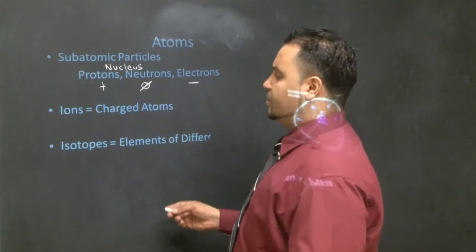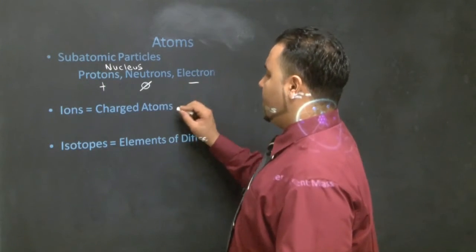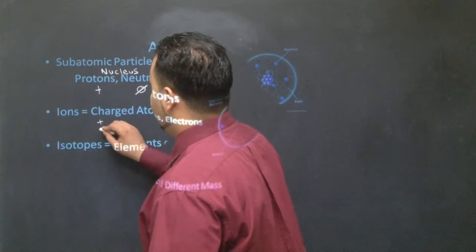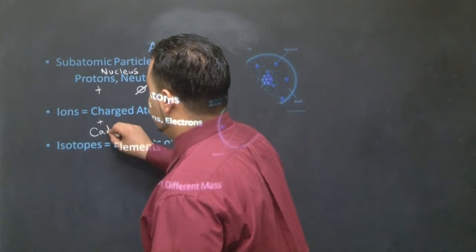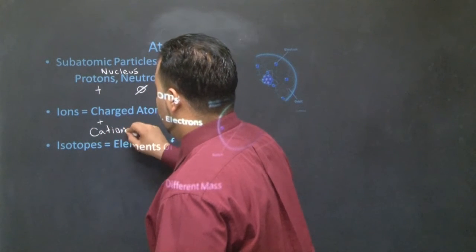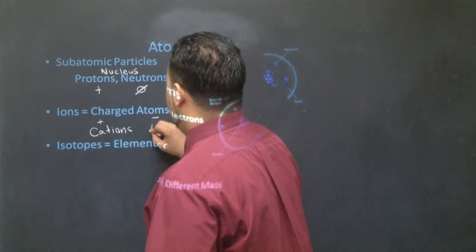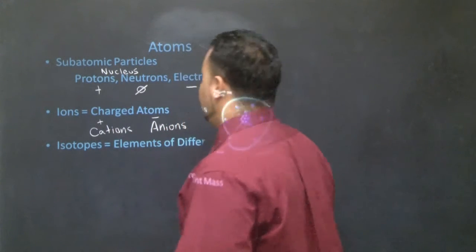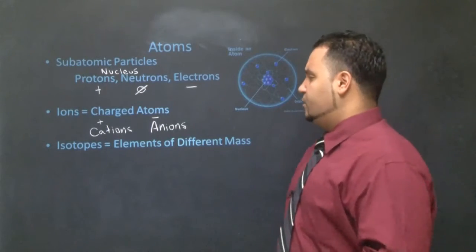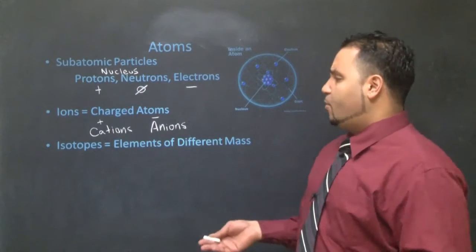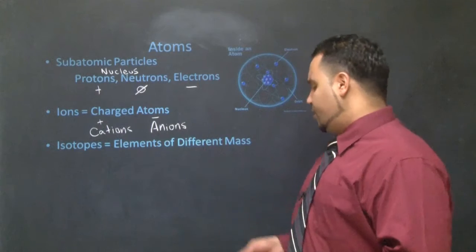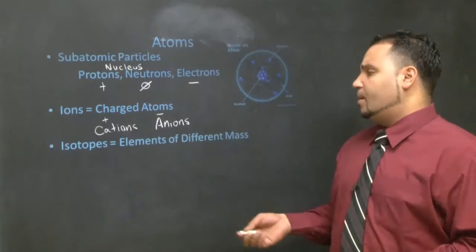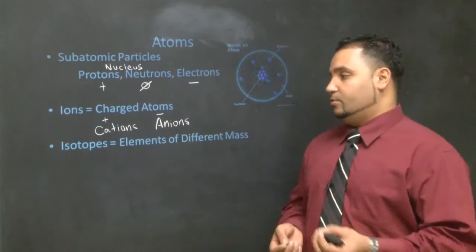Okay, ions are charged atoms. They come into two forms. They can either be positive, and if they're positive, we call them cations in chemistry. And if they're minus, we call them anions. Sodium, H+, all these are going to be very important cations that we're going to see. And in terms of the anions, also chlorine minus, oxygen minus two.